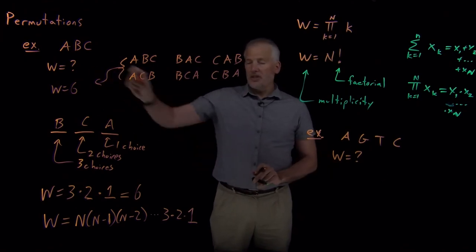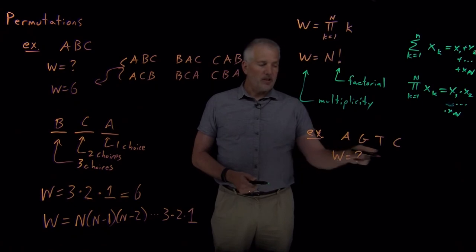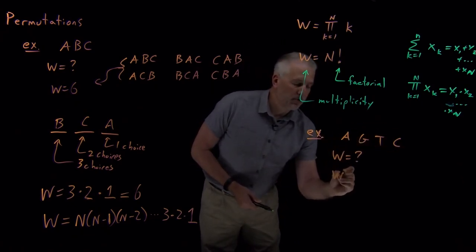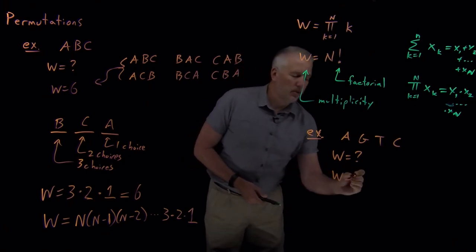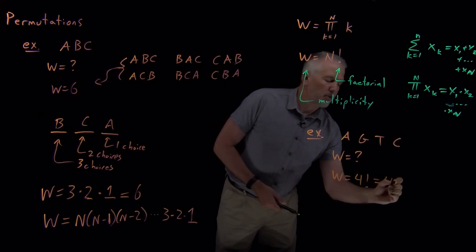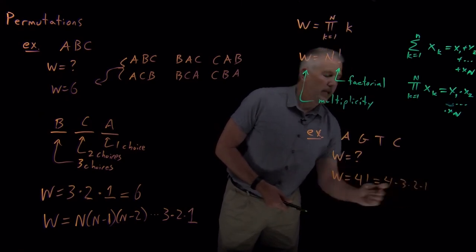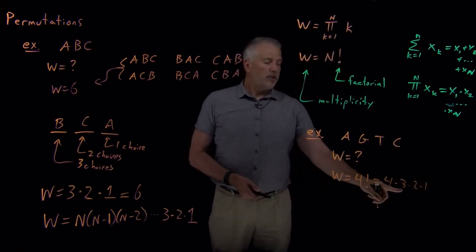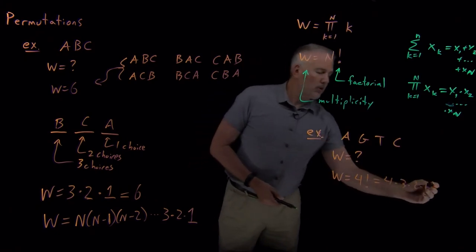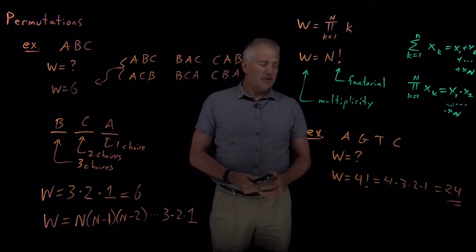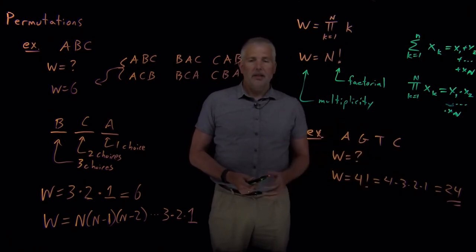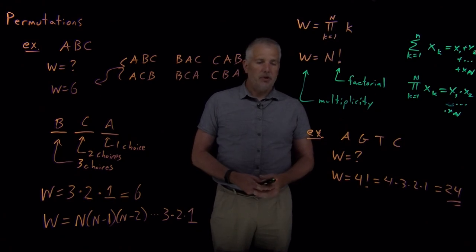That question has a lot more chemistry terminology in it, but it's really just the same thing as asking how many different words can I spell with these four letters. The total multiplicity of arranging, of permuting these four bases in any order that I want is going to be four factorial, or four times three times two times one. Four times three is 12, times two is 24. So there's 24 different permutations of these four DNA bases.